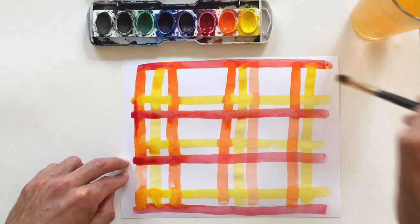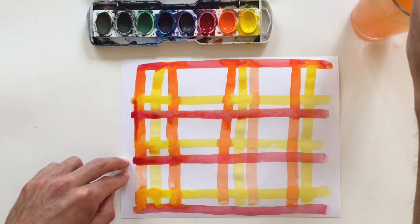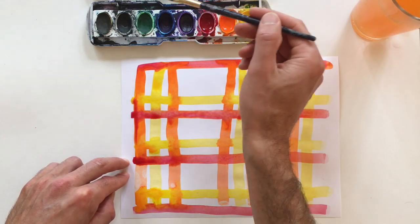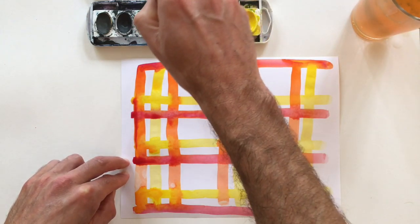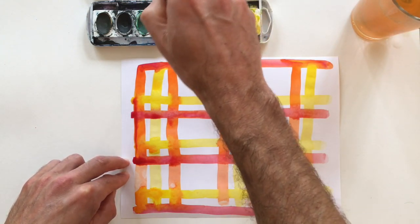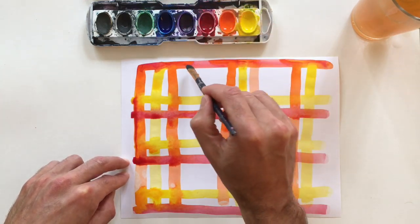Each time, I rinse off my brush in the water and pick a new color. I add a lot of water to the color, and then I make a straight line. Sometimes I dip my brush twice in the color.